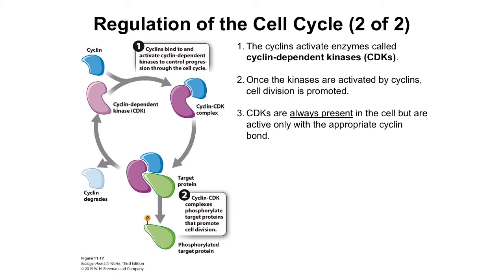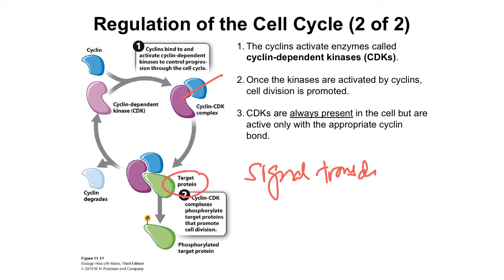So how do cyclins work? Cyclins bind to and activate cyclin-dependent kinases in order to control progression through the cell cycle. The binding of cyclin to CDKs causes a conformational change in the CDKs and activates them as a kinase. The kinase then targets, in complex with the cyclin, various target proteins and phosphorylates them, allowing these phosphorylated proteins to be activated in turn to perform their function — which is reminiscent of signal transduction pathways we studied in chapter 5.